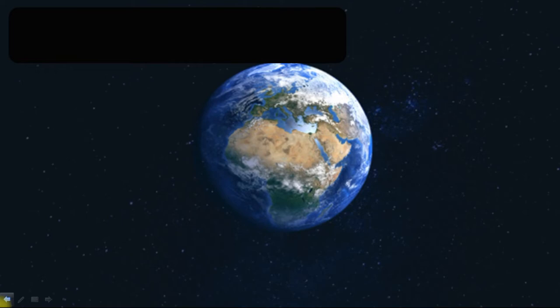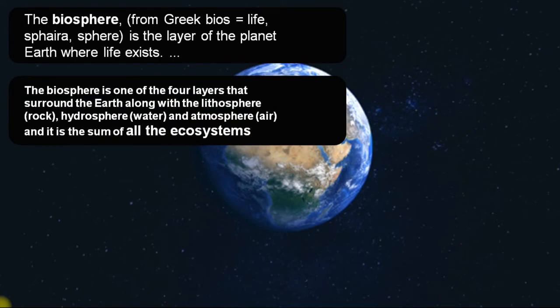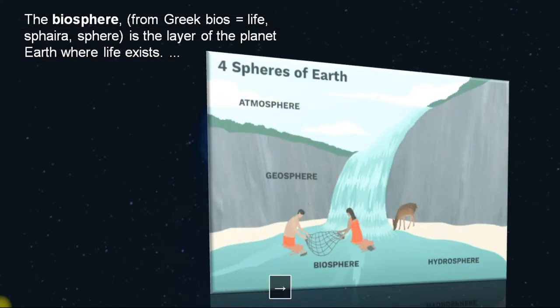We have seen what National Parks, Wildlife Sanctuaries, and Biospheres are. Now let us know more — what is the meaning of Biosphere? Bio means life, sphere means clear. Biospheres contain all four layers that are around the earth: lithosphere (rock), hydrosphere (water), atmosphere (air), and life. These are all parts of your Biosphere. Look at this picture — four spheres of life: atmosphere, geosphere, biosphere, hydrosphere — all of them together make up your earth, water, and life.